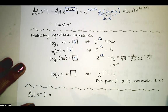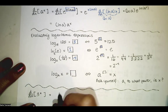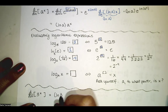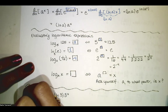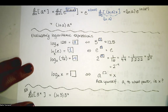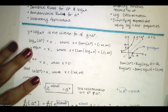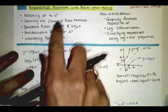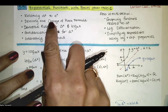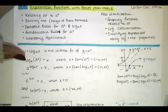Now we know the derivative of a to the x. For example, the derivative of 3 to the x is natural log of 3 times 3 to the x — that's the same function multiplied by the natural log of the base. With that identity, we can also derive the change of base formula.